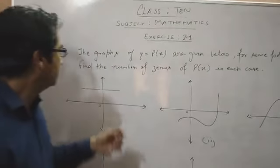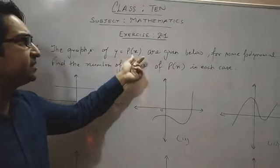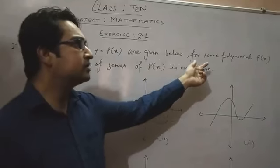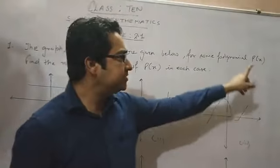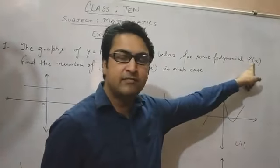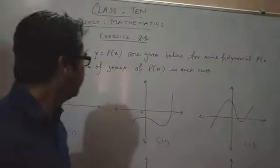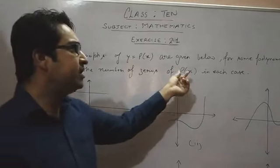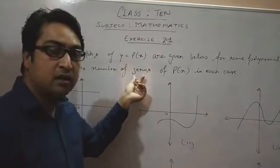The question is, the graph of y equals p(x) are given to you for some polynomial p(x). P stands for polynomial and x is the variable present in the polynomial. Find the number of zeros of p(x) in each case.